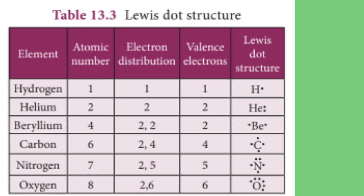The symbol of an element with the electrons' positions represented by dots or crosses — that is the Lewis dot structure. The electrons are shared between atoms, and this structure is created. In different colors, we can put dots on each atom to represent the electrons. So we use dots to represent the electrons of each atom.